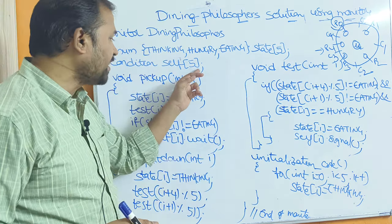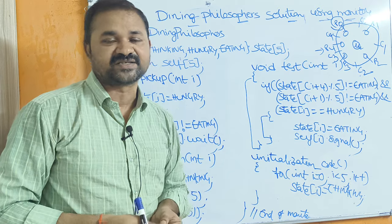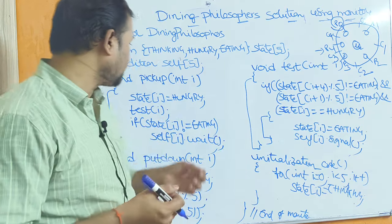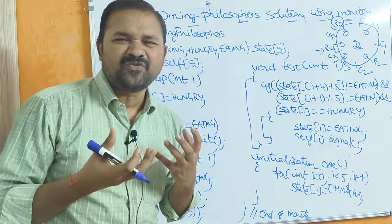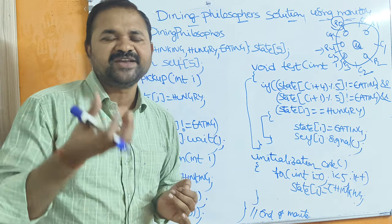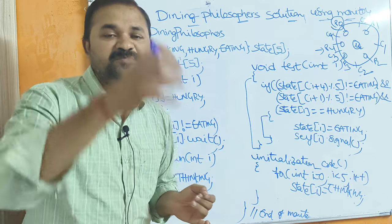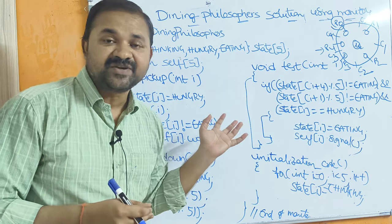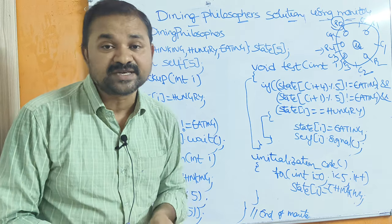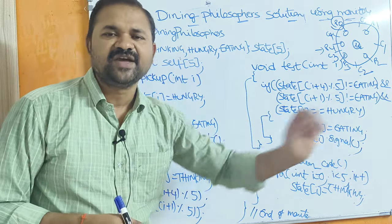Next, 'condition self[5]' — self[5] is a condition variable. We have 5 philosophers, from self[0] to self[4]. We can perform 2 operations on condition variables: the wait operation and the signal operation. If a process performs the wait operation on a condition variable, that process will be put in the suspended state. If a process performs the signal operation, one of the suspended processes will be resumed.